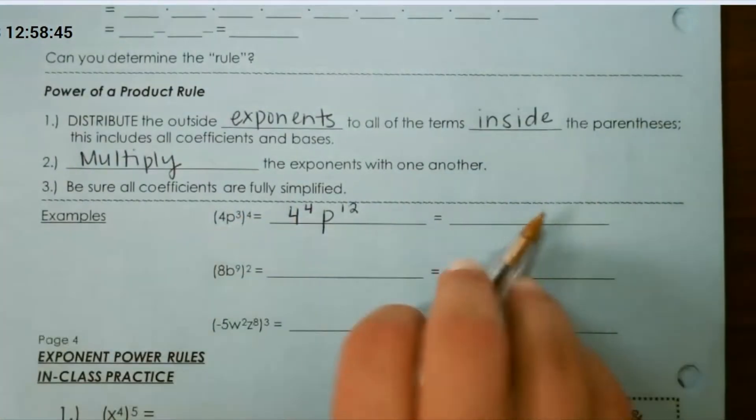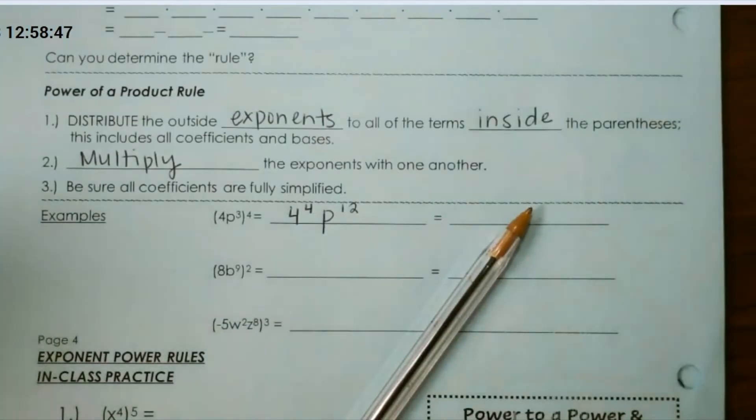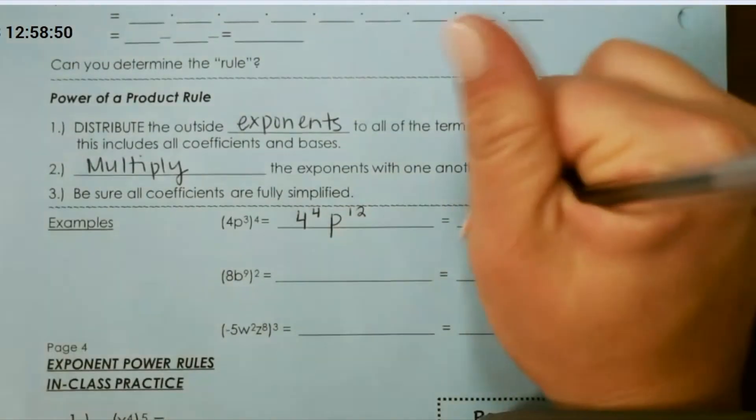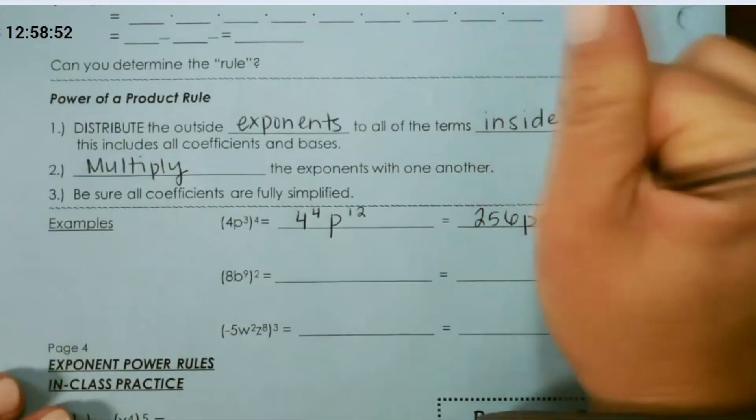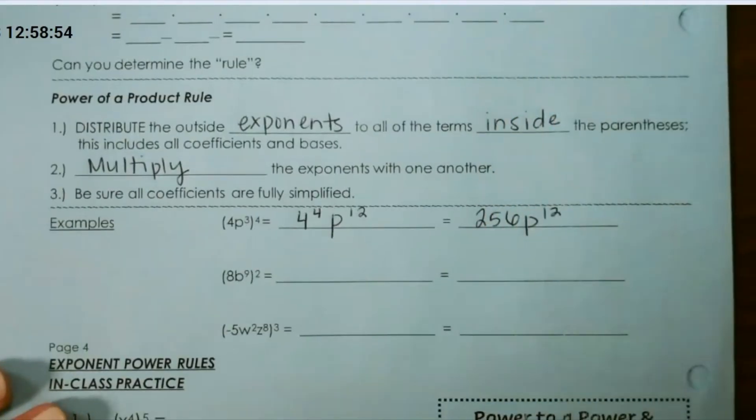We can evaluate 4 to the fourth power, which gives us 256 p to the twelfth power. For our next one,